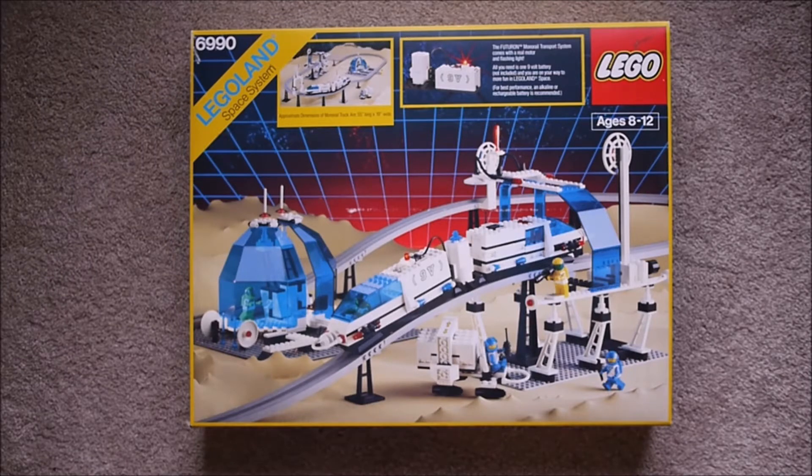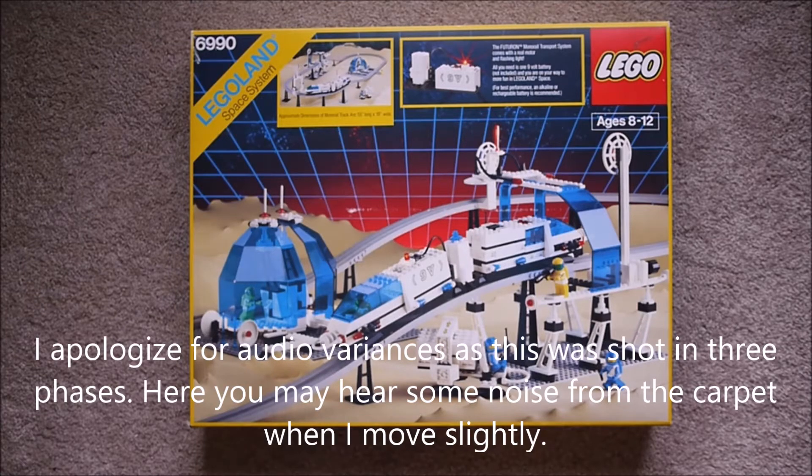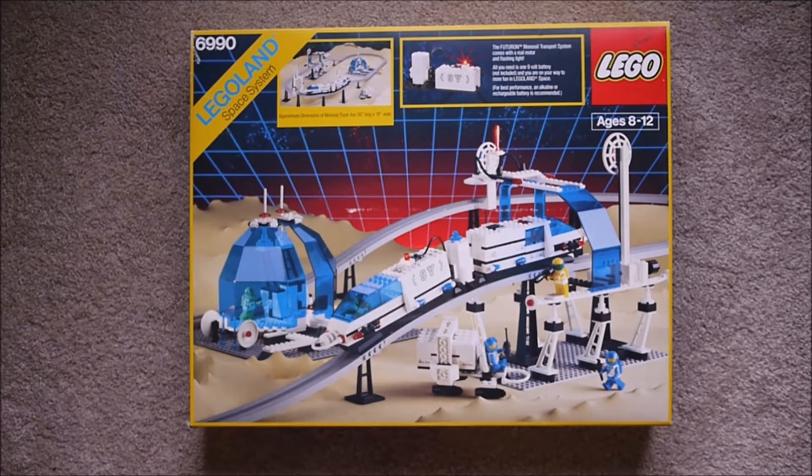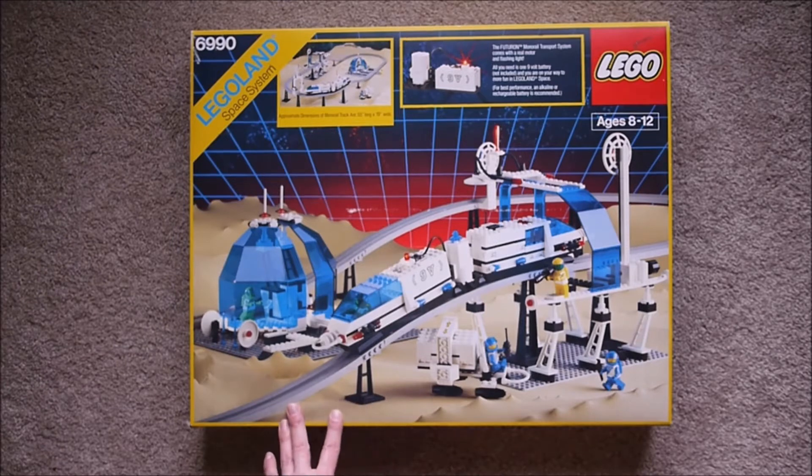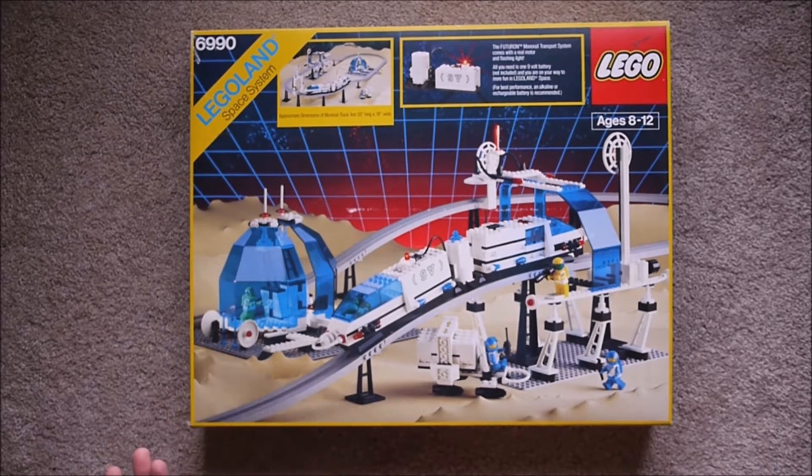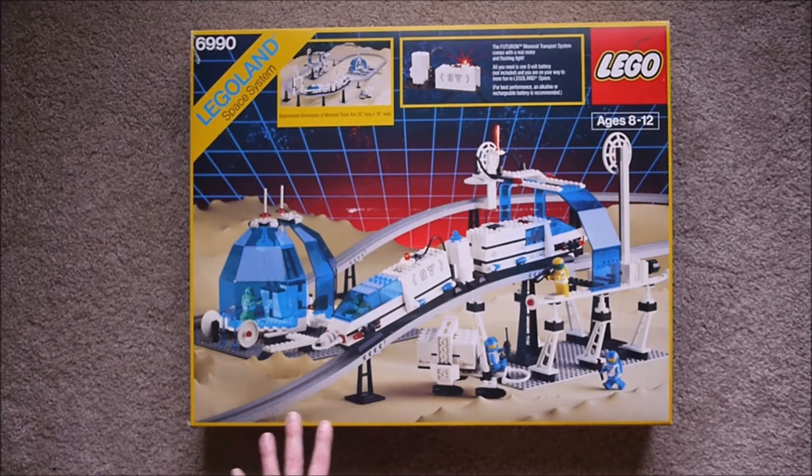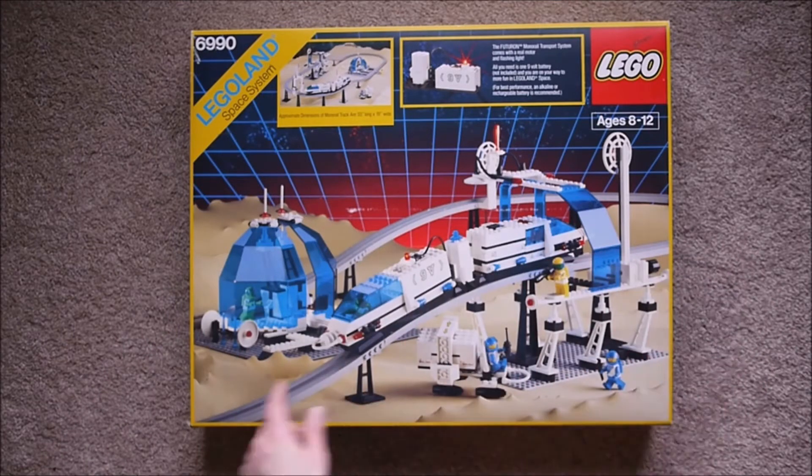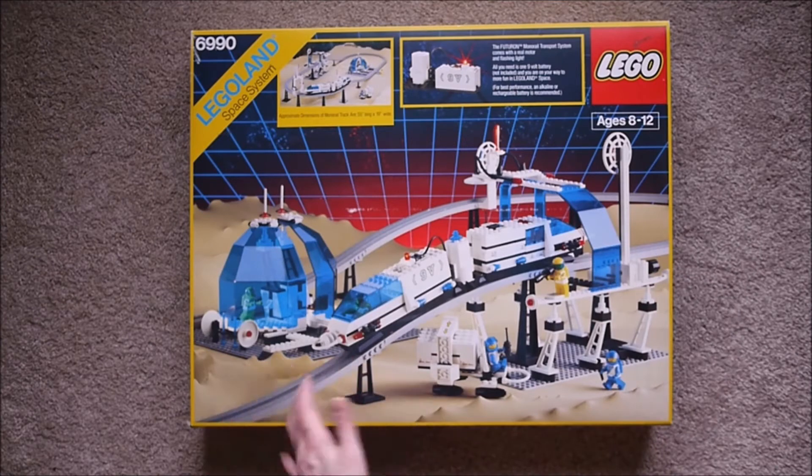This is part of the space theme for LEGO, but it's like a subset, Futuron, released in 1987. It's also when they introduced the Blacktron theme, so LEGO had expanded the space theme in 1987 for a few years. As the name indicates, it's a monorail system, so it doesn't quite all fit on the front of the box cover.